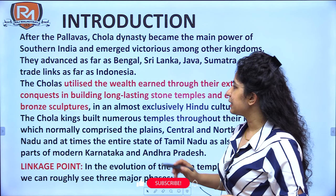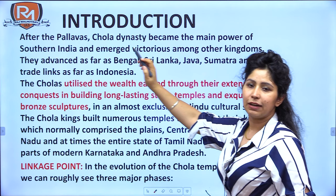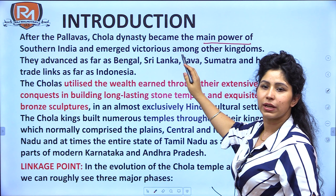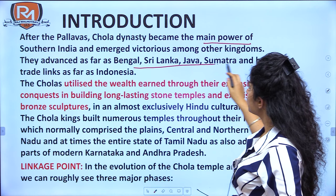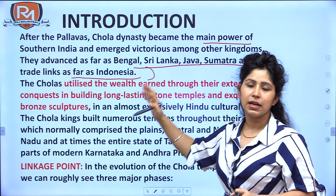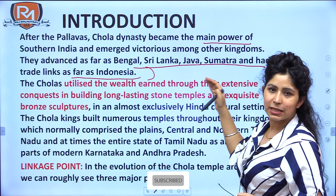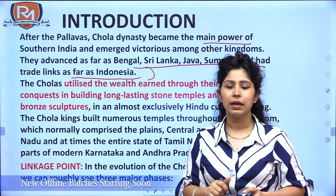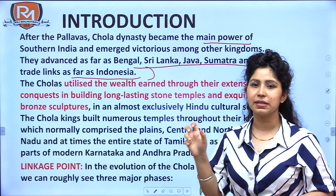The first line tells how Cholas came to power. After the Pallavas, the Chola dynasty became the main power of Southern India, emerging victorious among other kingdoms. They advanced as far as Bengal, Sri Lanka, Java, and Sumatra, and had trade links as far as Indonesia. You can also use a map shading the area where the Chola dynasty ruled, including the Southeast Asia region of Java and Sumatra.